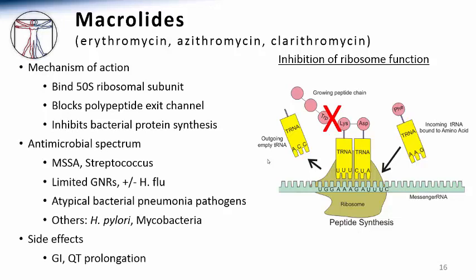Like all antibiotics, macrolides have a specific spectrum of bacteria that they inhibit. These include many typical and common bacteria such as methicillin-sensitive Staph aureus, as well as many Streptococcus species. The later generation macrolides, azithromycin and clarithromycin, have some activity against gram-negative bacteria such as Haemophilus influenzae. Very relevant for this talk, macrolides are often active against the atypical bacterial pathogens of pneumonia such as mycoplasma, chlamydophila, and legionella. Altogether, the spectrum of activity makes these drugs very effective for treating many patients with respiratory infections.